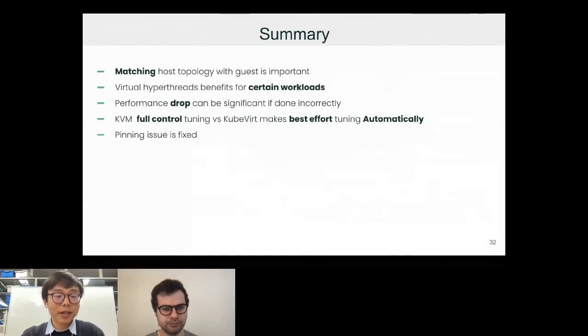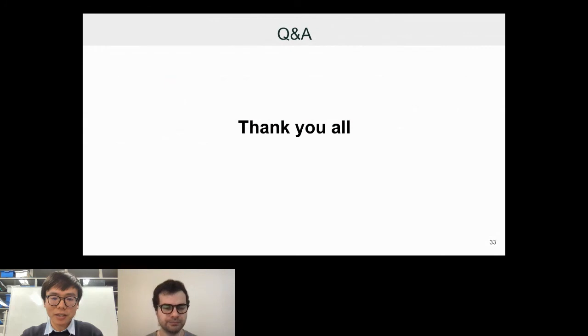So just to summarize, I think matching the host topology with the guest is really important. The virtual hyperthread benefits from certain workloads, not for all kinds of workloads, and as our benchmark results show, the performance drop can be significant if done incorrectly. Another note is that KVM offers you full control for tuning compared to Kubvirt, which makes the best effort tuning automatically. So there is essentially a trade-off, and you want to choose whether you want to do things more automatically or manually. As usual, there is no one solution to solve all the problems, so you need to make the trade-off. And the last thing, the pinning issue is indeed fixed, which is quite good news. That's the end of the presentation. Thank you all for listening and feel free to ask any questions.